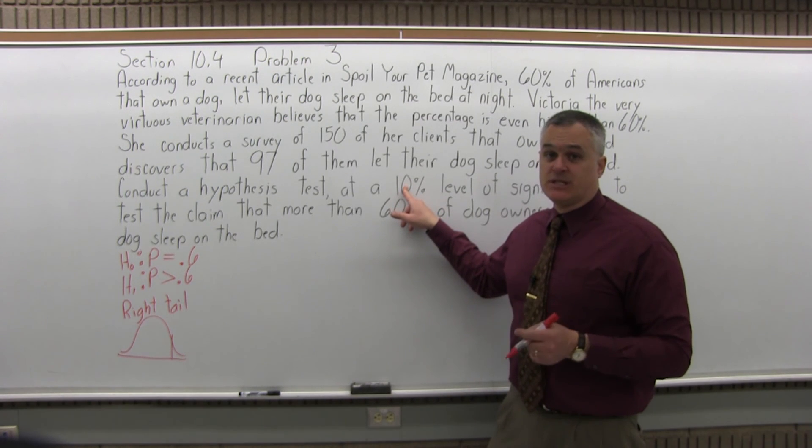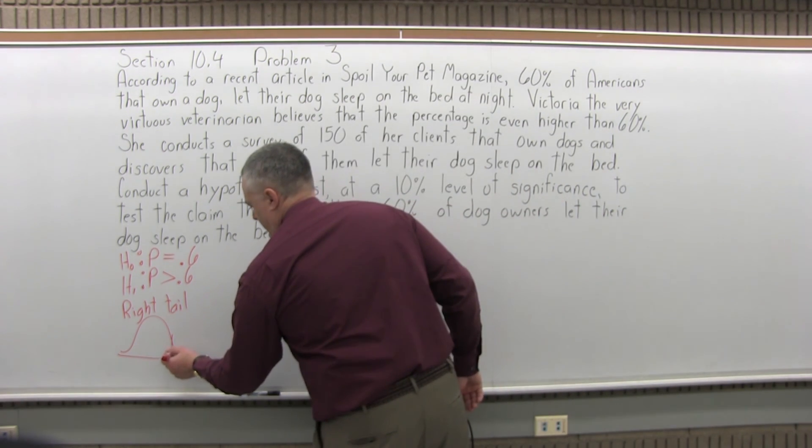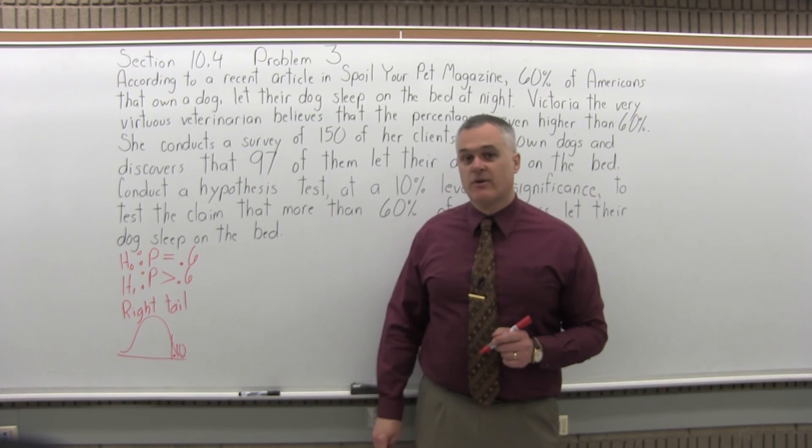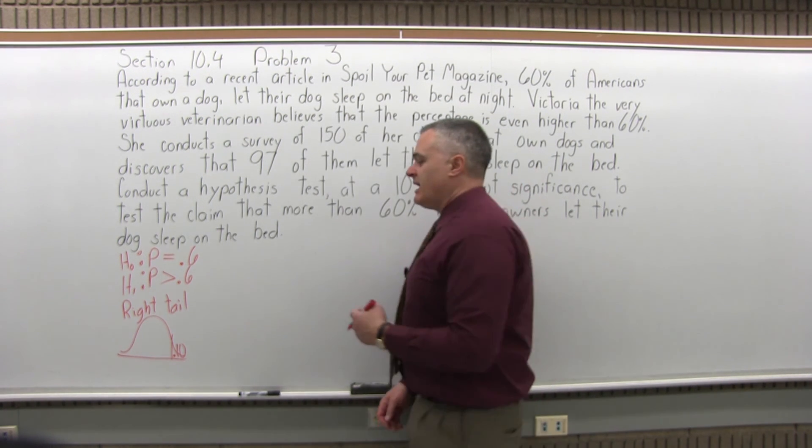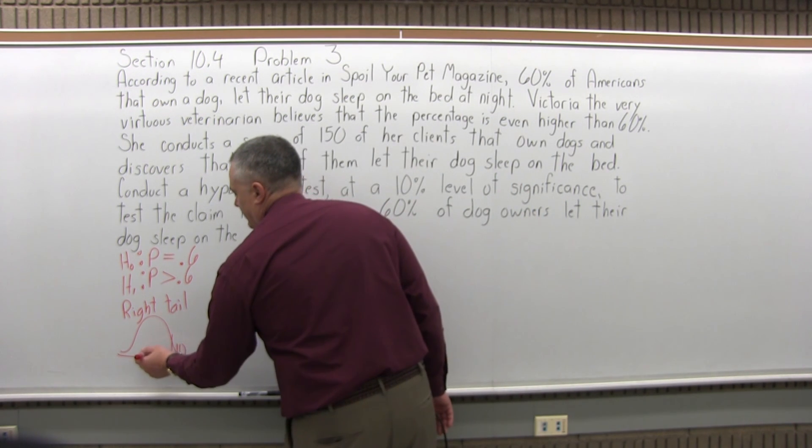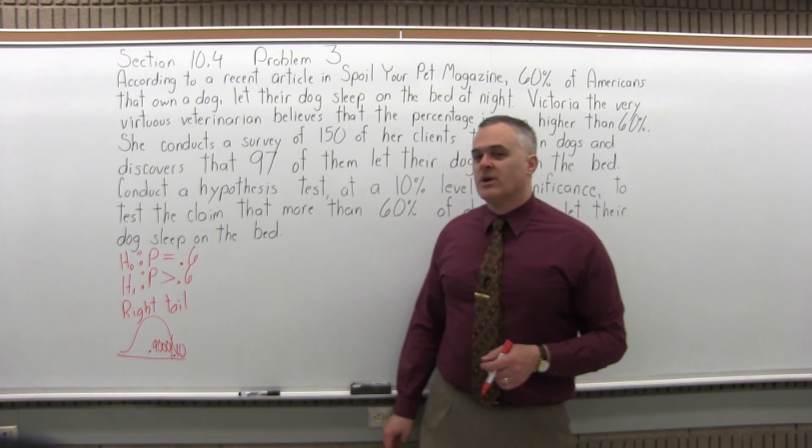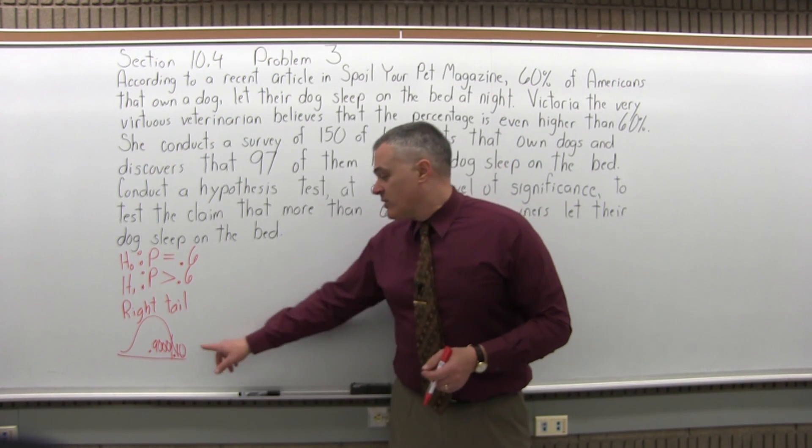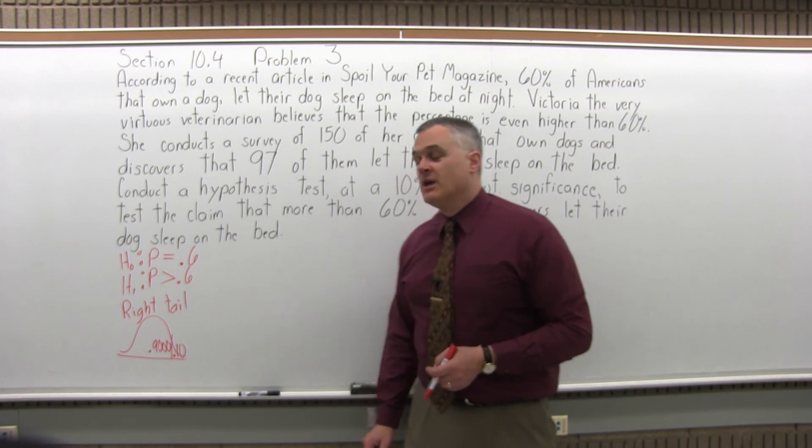What that means is our critical region for this test is in the right side or right tail of our graph. The question says use a 10% level of significance for the test. So if we go into the rightmost 10% or 0.10 on our graph, we're in the critical region, which means we would reject the null. If we fall short of that, say 90% or in terms of what you'd find in your chart 0.900, you would fail to reject the null. Let's do the work and see whether we wind up in the critical region or not.